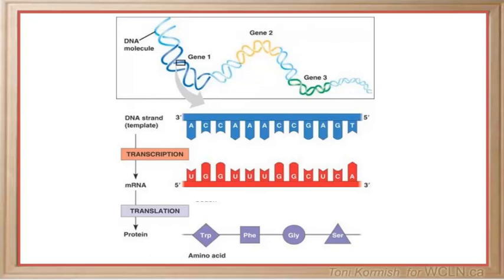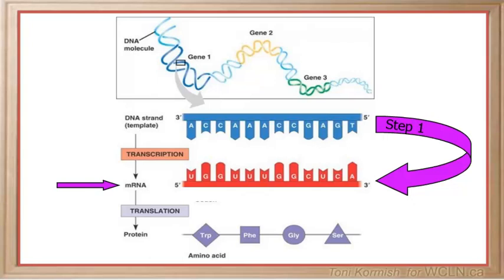A gene directs the synthesis of a protein by a two-step process. First, the instructions in the gene found in DNA are copied into a messenger RNA molecule, or mRNA molecule. The sequence of nucleotides in the gene determines the sequence of nucleotides in the mRNA strand. This step is called transcription.